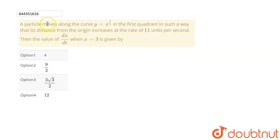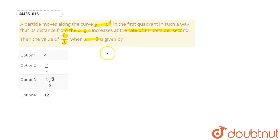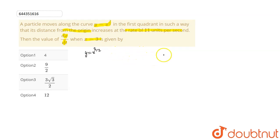Here the question is: a particle moves along the curve y = x^(3/2) in the first quadrant, in such a way that its distance from the origin increases at the rate of 11 units per second. Then the value of dx/dt when x = 3 is given by. So in this question, we have to find the value of dx/dt.